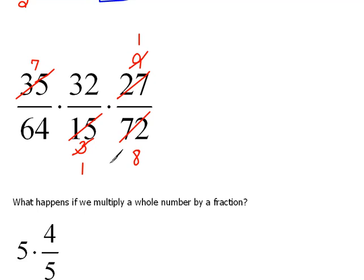And now we can continue looking. The 32 and the 64 have something in common. They're actually both divisible by 32. 32 goes into here once, and 32 goes into 64 two times.